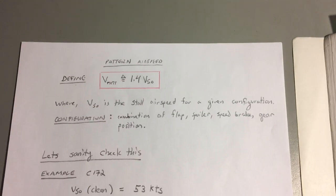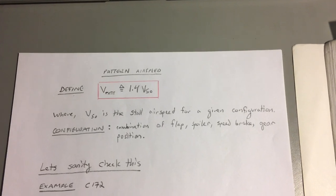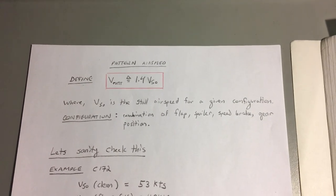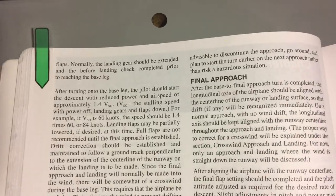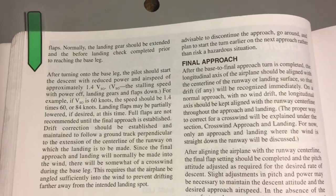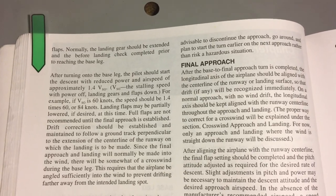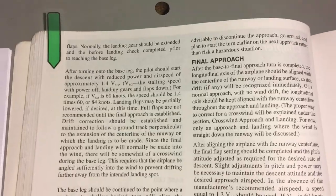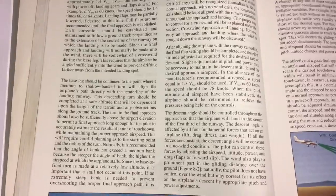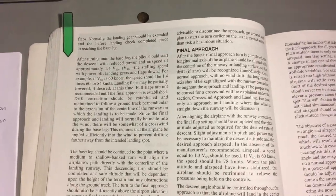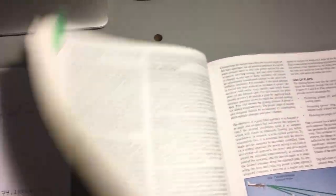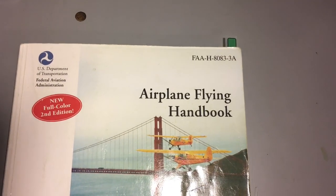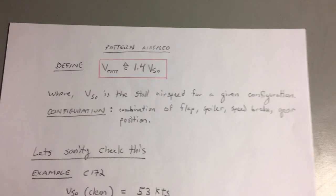Once again it's 1.4 times the stall speed of the airplane where the stall speed is a function of the configuration of the aircraft, and that definition is coming from page 8-2 in the pilot FAA operating handbook. You can see here at the top of page 8-2 it says after turning onto the base leg the pilot should start the descent with reduced power and airspeed of approximately 1.4 VSO. That's how we're getting our definition of pattern airspeed.